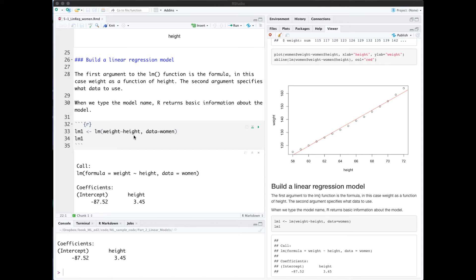The first argument is the formula. So this is weight tilde height. We want to model weight as a function of height. And the second argument is specifying what data we're using. When we echo back out the model, LM1 in this case,